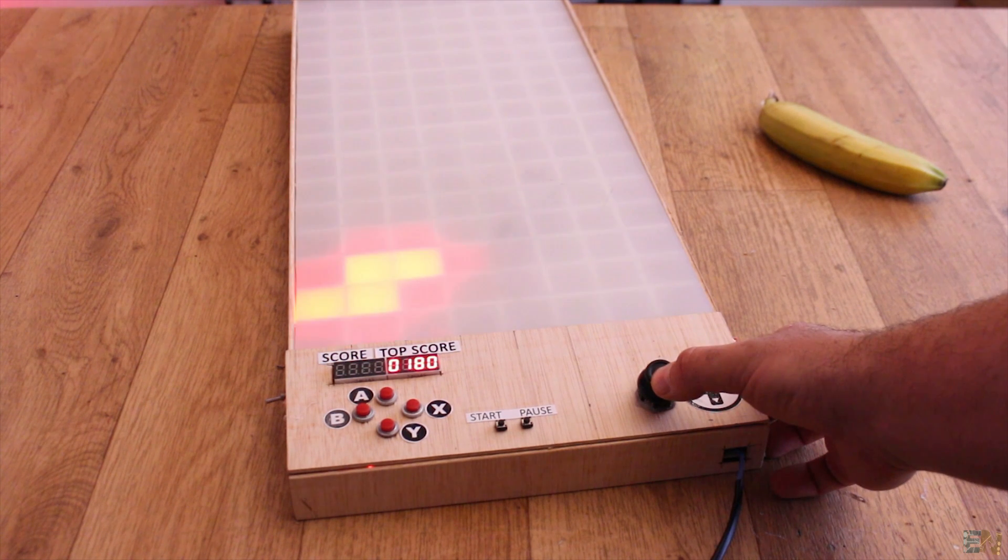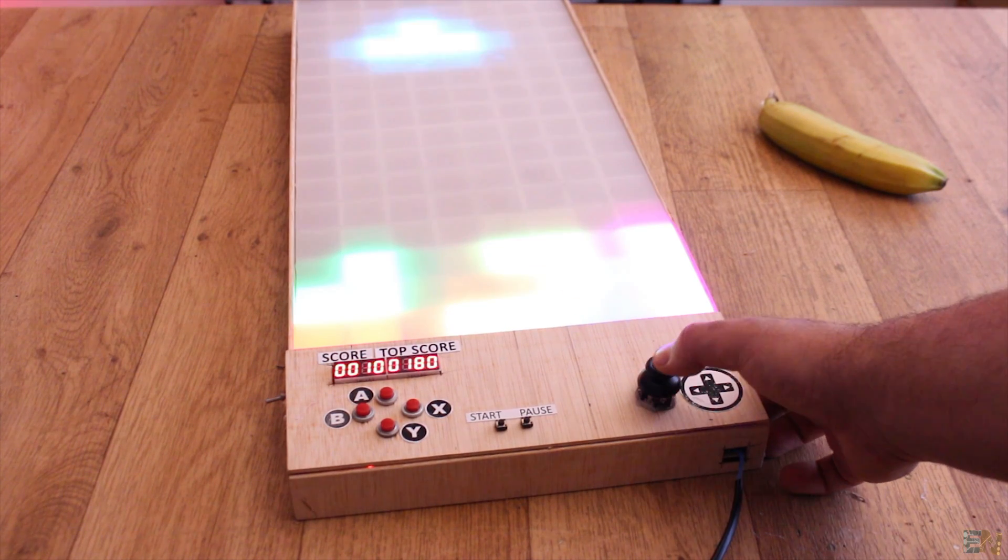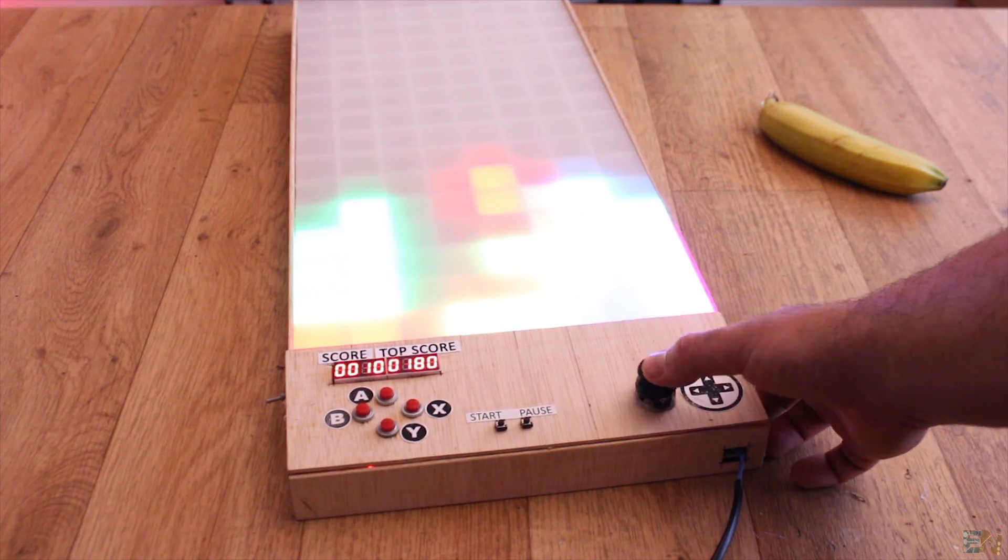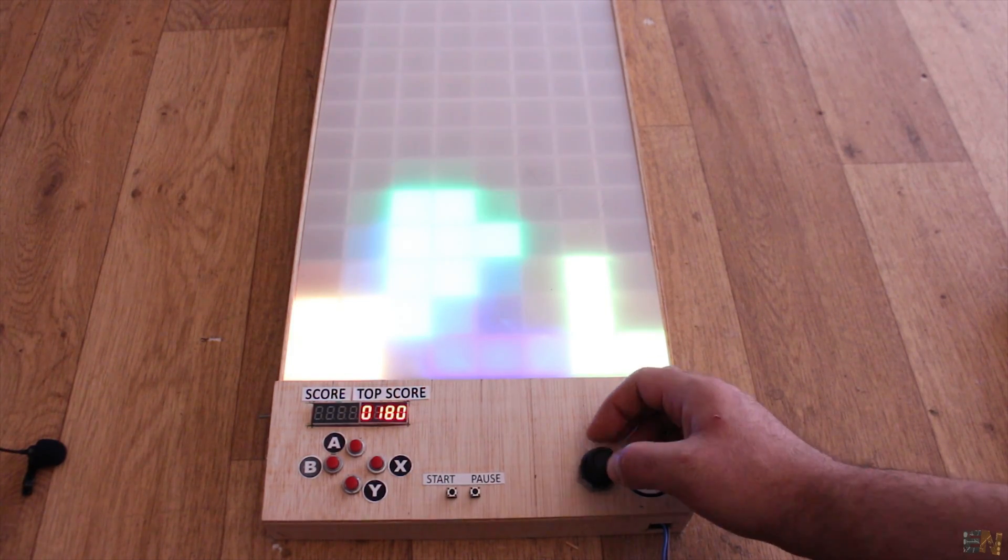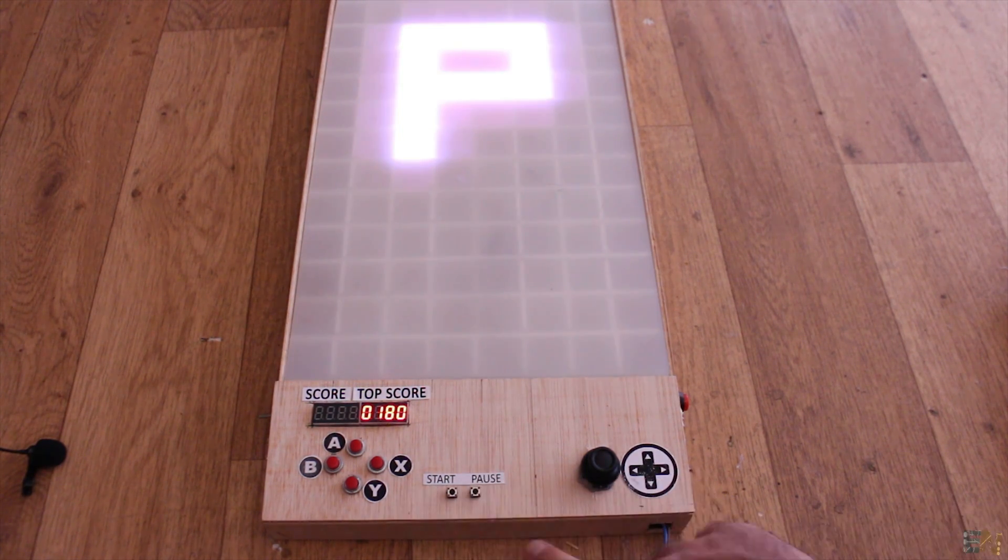So now you can use the joystick to move the pieces left and right, to accelerate downwards or rotate the piece. Press the pause button and the game will stop till you press that button again. At the same time, the P letter will appear on the LED matrix and you will also hear the pause sound.